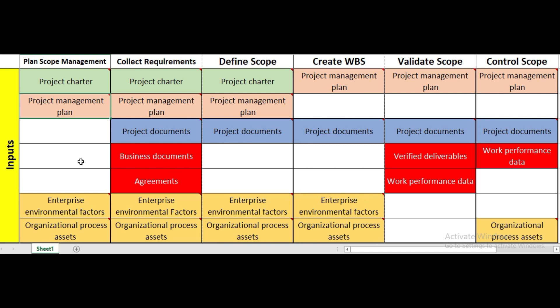The red-colored boxes are distinct — they are not overlapping across other processes. For example, business documents is a distinct input for collect requirements, and verified deliverables is a distinct input for validate scope. In contrast, project documents appear in collect requirements, define scope, and create WBS — so they overlap and are not highlighted in red.